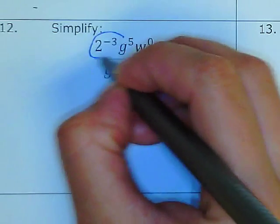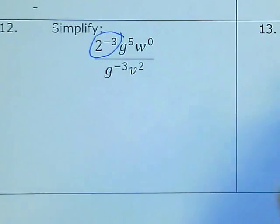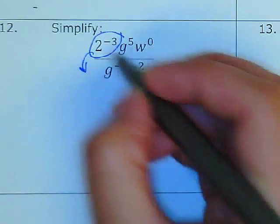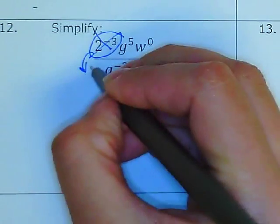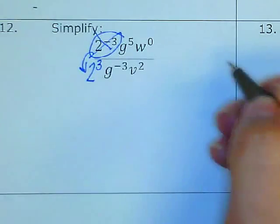For example, 2 to the negative 3rd. This one has a negative exponent, so to get rid of that negative, we bring it down. I cross it out here, and now it's going to be down here without the negative.